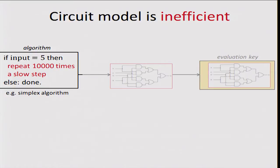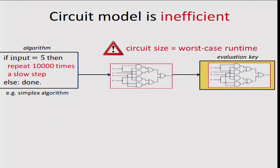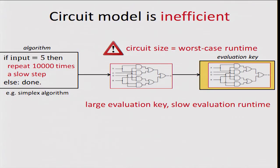A natural example is the simplex algorithm, a popular algorithm in linear programming that on most instances in practice runs very fast, but on rare instances runs in exponential time. To convert such an algorithm into a circuit, we unroll every computation to the maximum number of steps and consider every branch. What we get is a circuit whose size is the worst-case running time over all inputs of a certain size. The evaluation key is at least as large as that circuit, and the evaluation also runs in worst-case time even though the algorithm runs fast on almost all inputs.